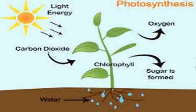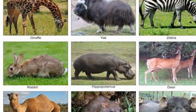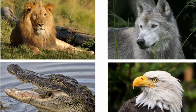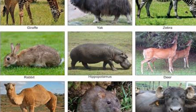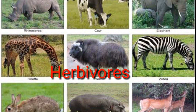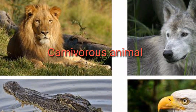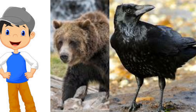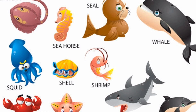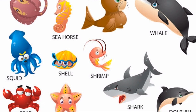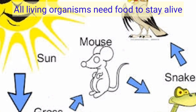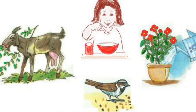Plants prepare their food in the form of glucose. Animals cannot prepare their food on their own, so they depend on either plants or other animals for food. Animals who depend on plants are known as herbivores, whereas carnivores feed on the flesh of other animals. Omnivores eat both plants and animals. Aquatic animals feed on tiny insects, worms, and plankton available in water. If any creature does not get food for a very long time, they will finally die.